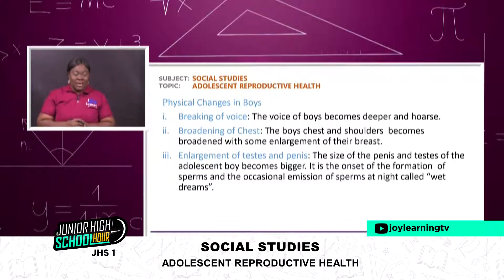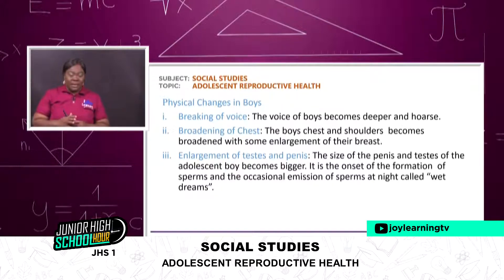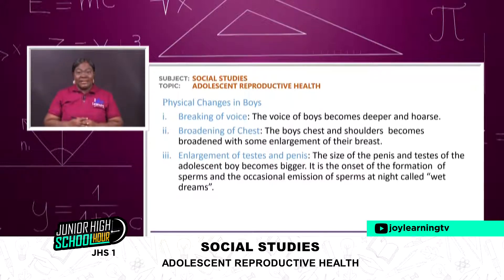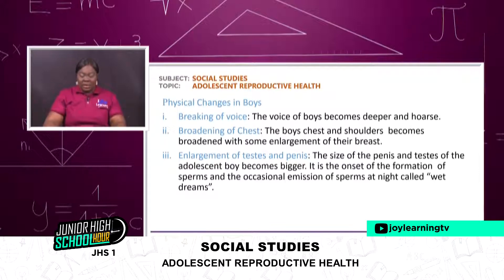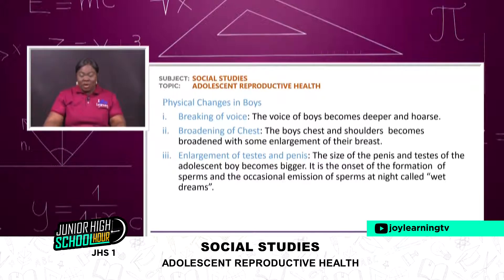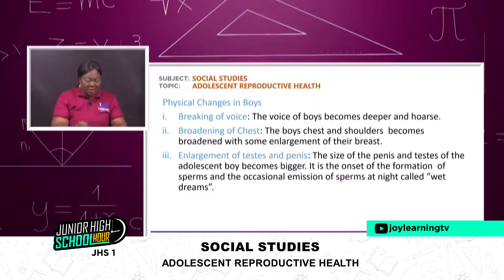Broadening of the chest — the boy's chest and shoulders become broadened with some enlargement in their breasts. Enlargement of testes and penis — the size of the penis and testes of the adolescent boy become bigger. It is the onset of the formation of sperm and the occasional emission of sperm at night called wet dreams. You shouldn't get scared — it's nothing at all, it's part of creation.